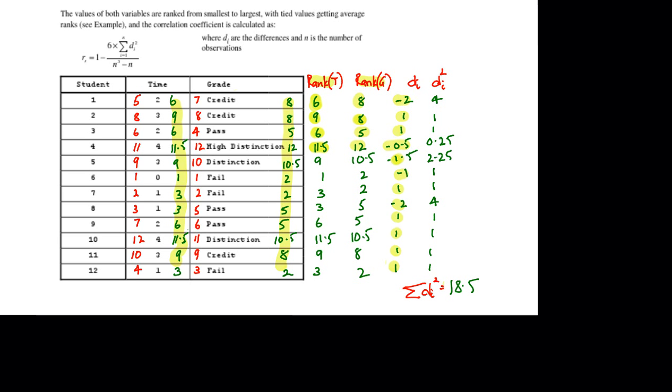Then we simply square these values. So minus 2 squared is 4, 1 squared is 1, 1 squared is 1, 0.5 squared is 0.25, minus 1.5 squared is 2.25, and so on.